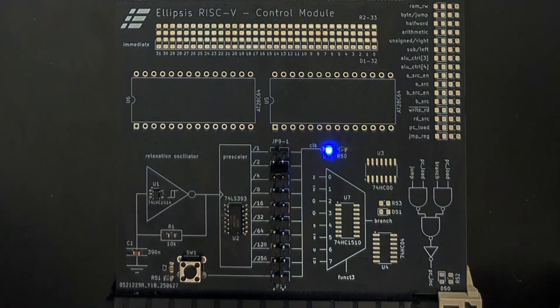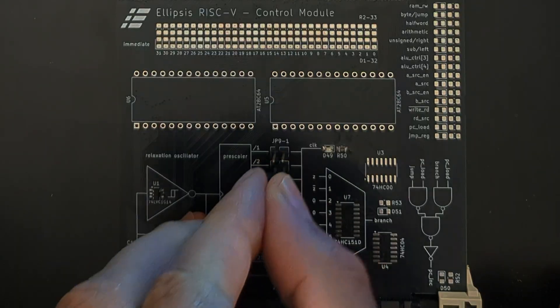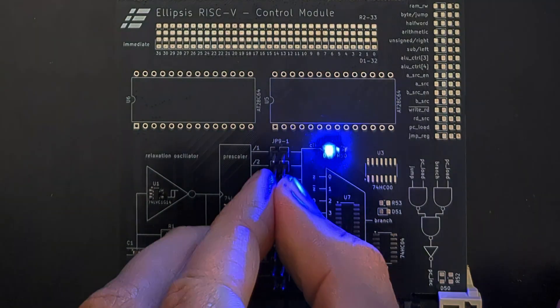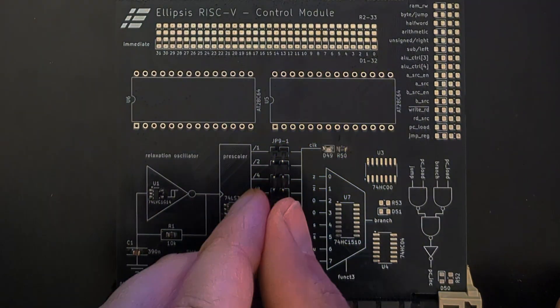And we can check the other prescaler outputs, so that's divided by 128, that's going to be close to 2 hertz, around 4 hertz, and so on. So they all seem to be working pretty well.